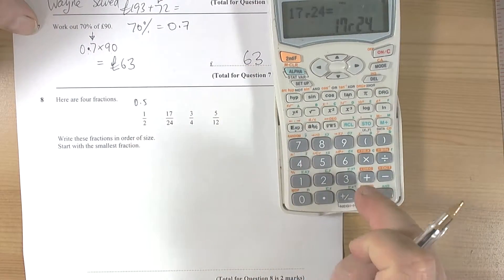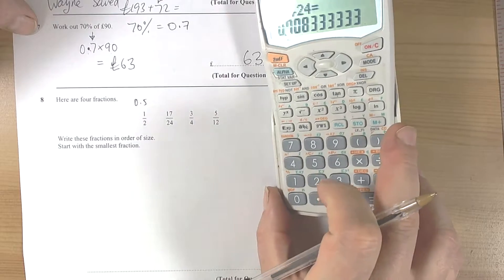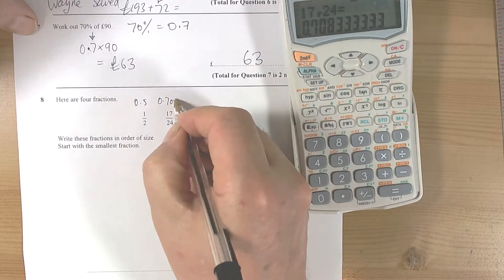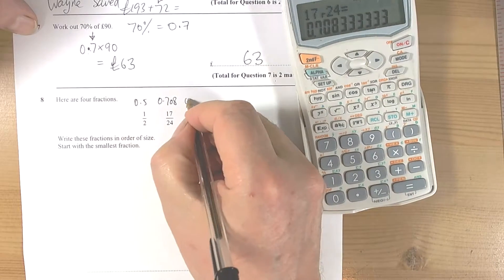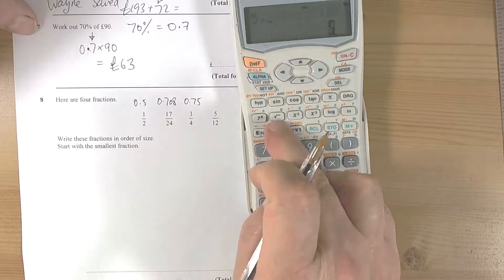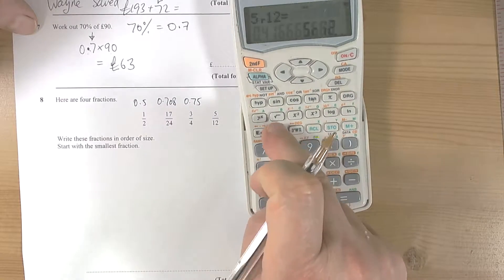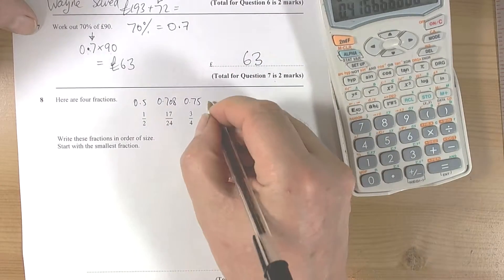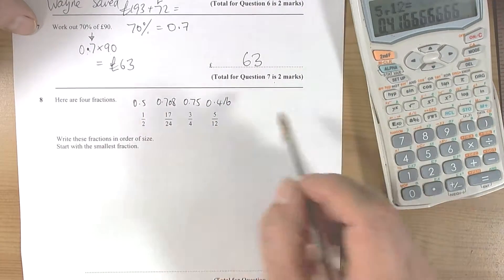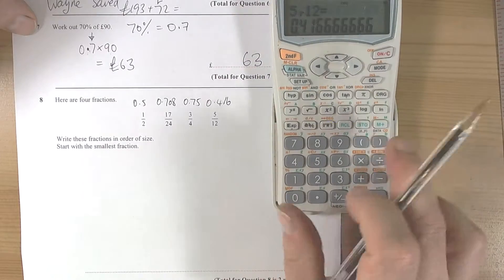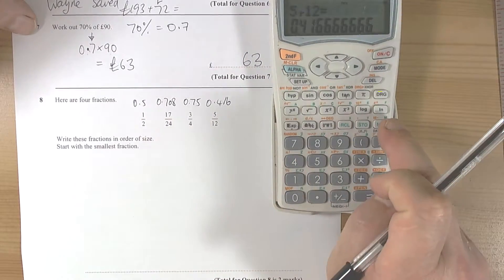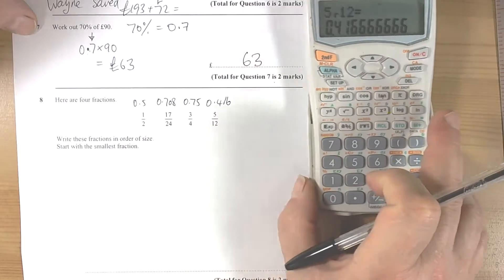17/24 equals, and then change it by pressing the fraction key again. So 0.708. 3/25 we should know is 0.75. 5/12 equals, press the fraction key again, 0.416. So we can change them all into decimals by using the fraction key on the calculator. Some calculators have an auto-change key, so write the fraction by pressing the fraction key and then press the change key, and it will change it to a decimal for you.